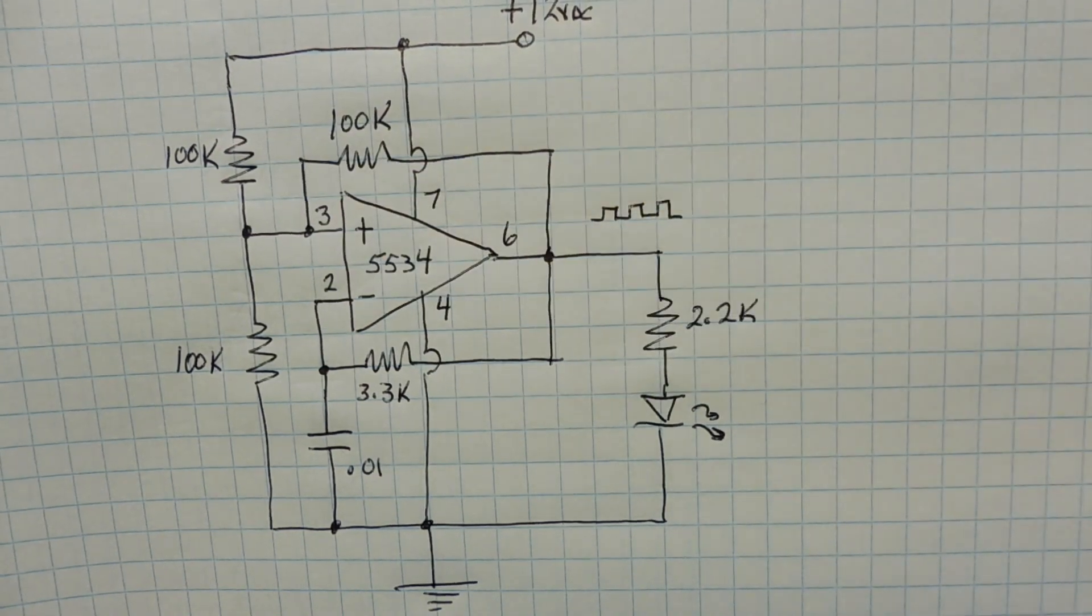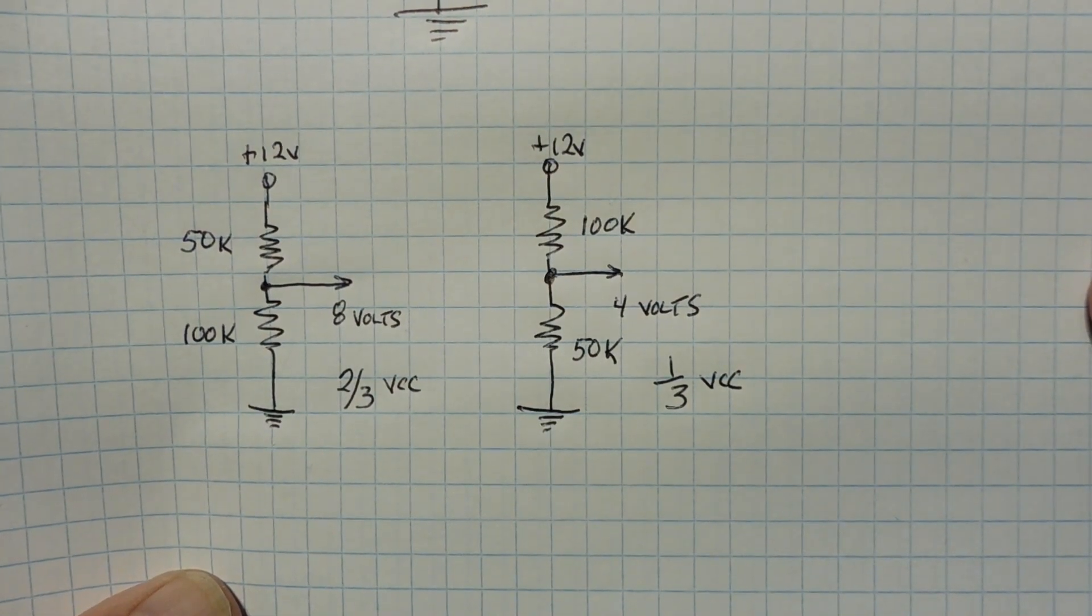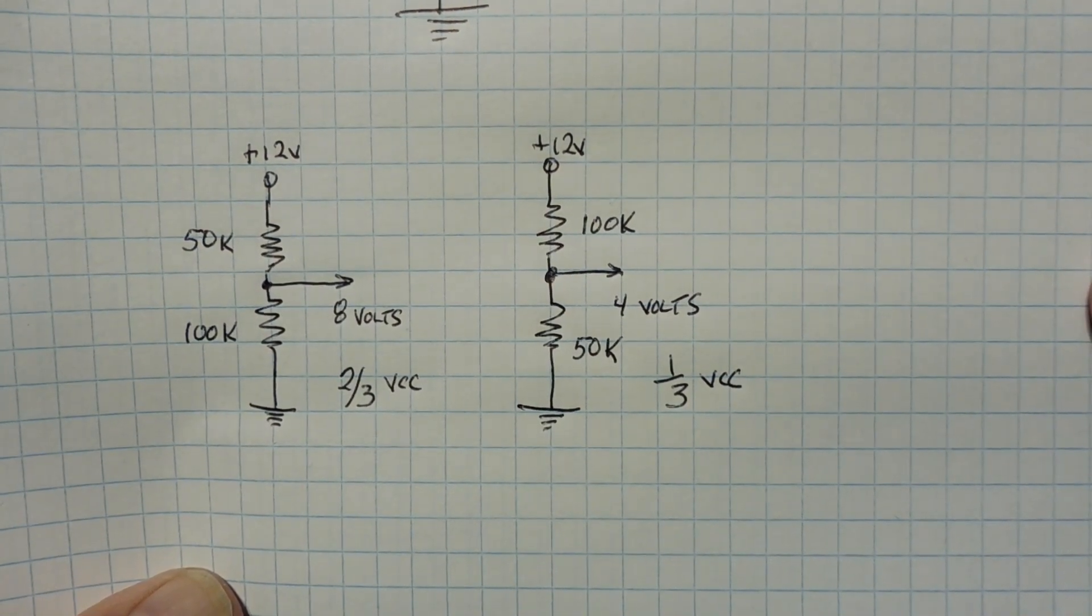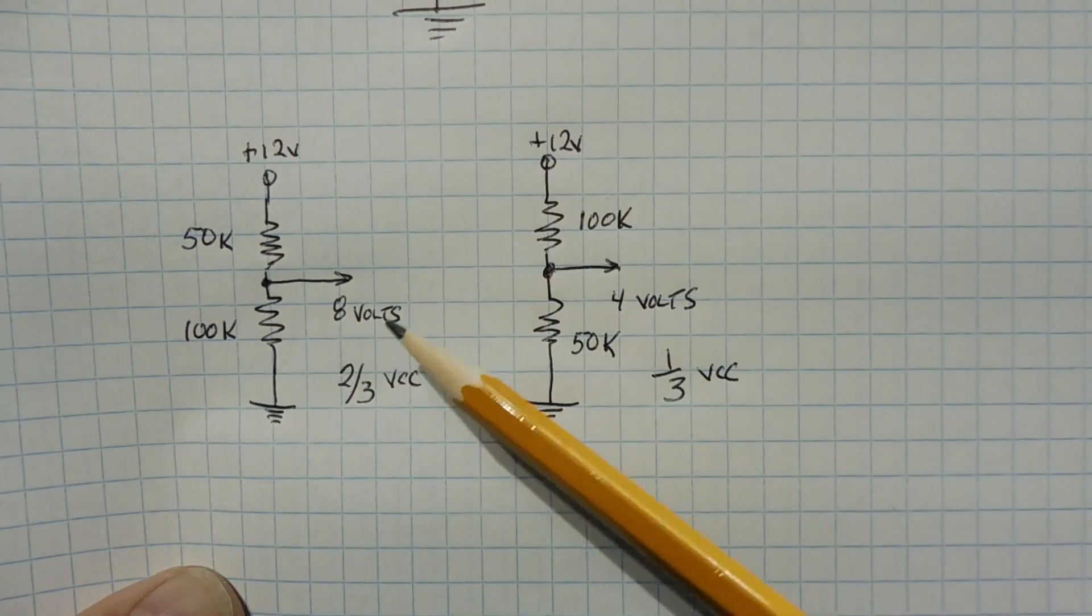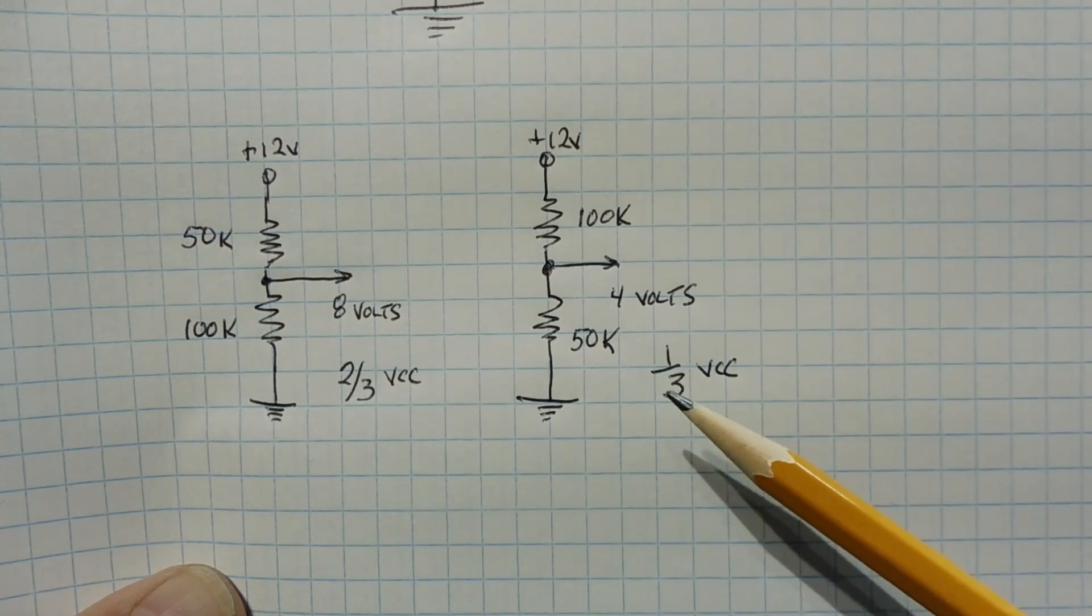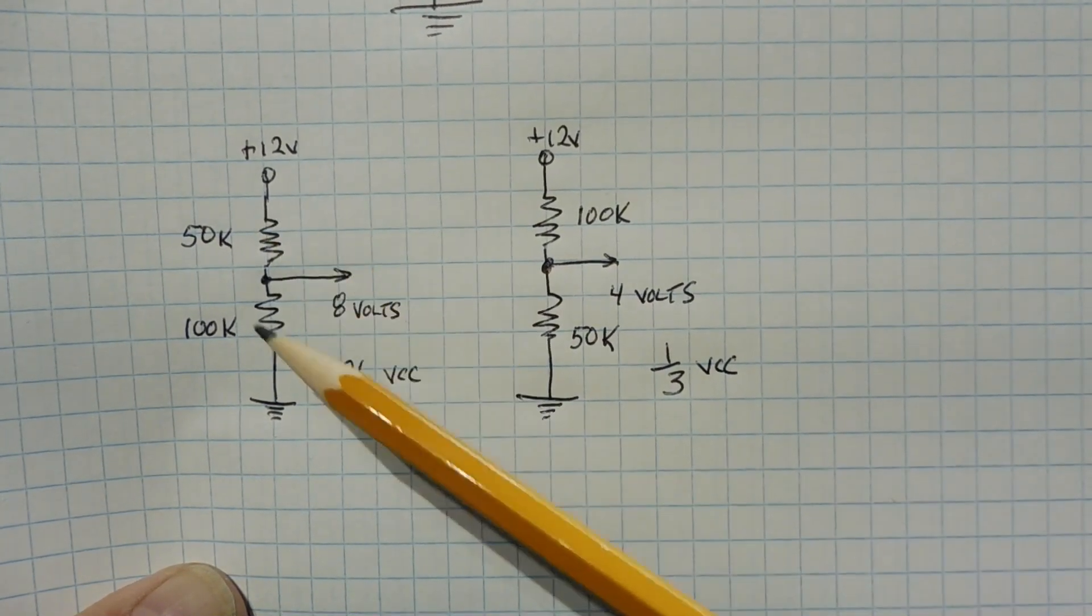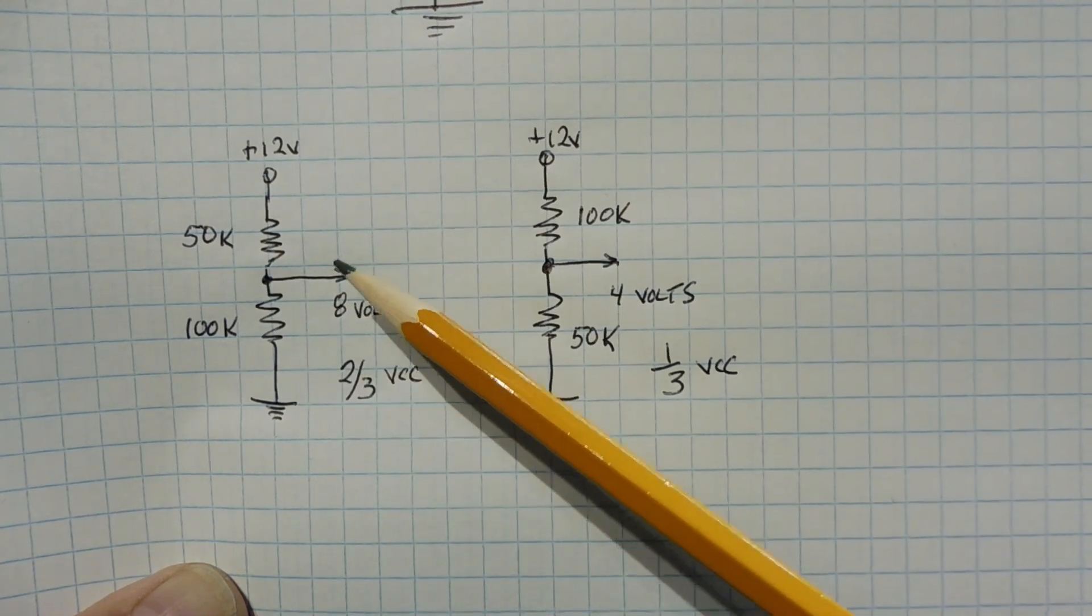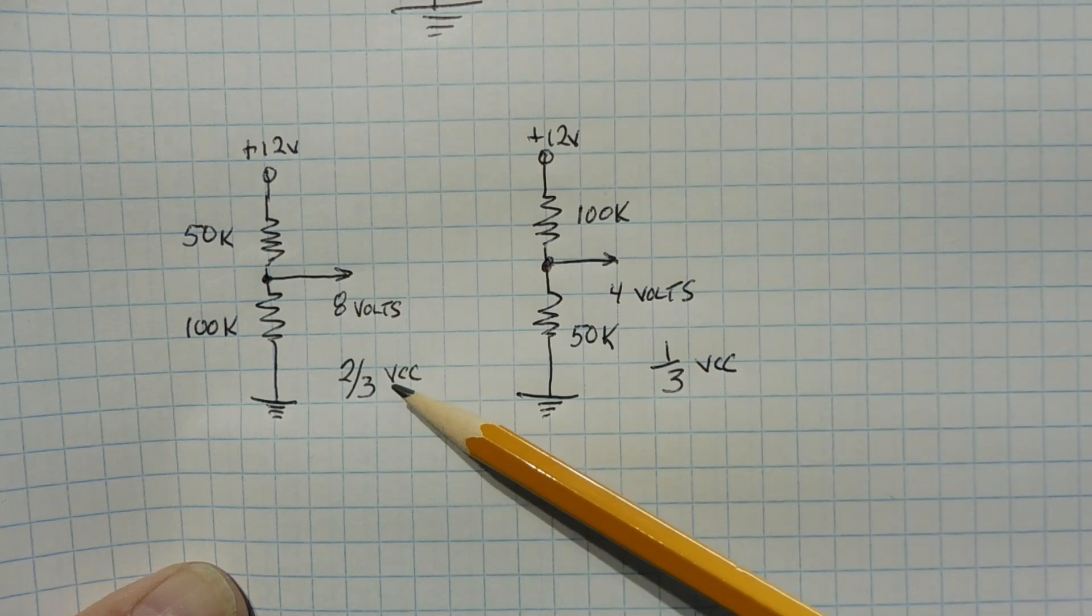Okay, here's the schematic of the two voltage dividers that are feeding pin 3 of the op amp, which gives us our two trip voltages of 8 volts, which is two-thirds VCC, and 4 volts, which is one-third VCC. So when pin 6 is high, we're going to have a voltage divider of 50k on the top, and 100k on the bottom. We'll get 8 volts feeding pin 3 of the op amp, which will give us two-thirds VCC trigger voltage. That's on charging.